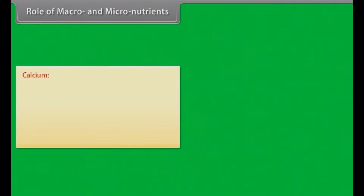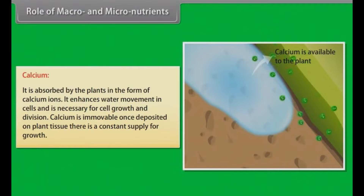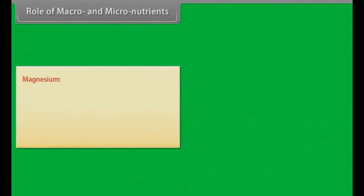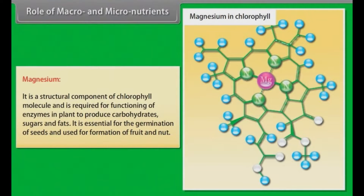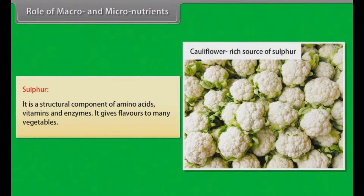Calcium is absorbed as calcium ions; it enhances water movement in cells and is necessary for cell growth and division. Calcium is immovable — once deposited on plant tissue, there is a constant supply for growth. Magnesium is a structural component of the chlorophyll molecule and is required for enzyme functioning to produce carbohydrates, sugars, and fats; it is also essential for seed germination and fruit and nut formation. Sulfur is a structural component of amino acids, vitamins, and enzymes, and gives flavor to many vegetables.